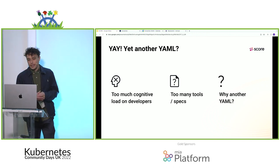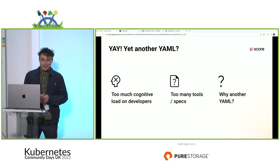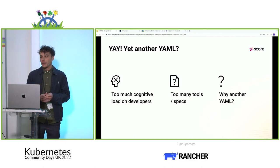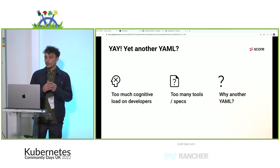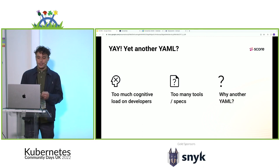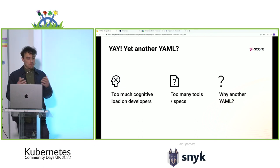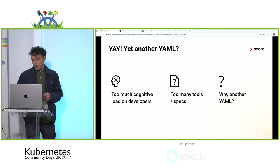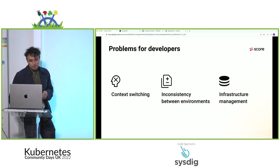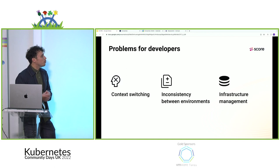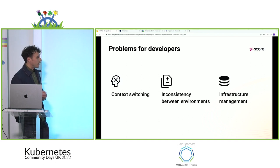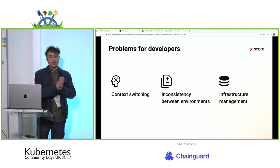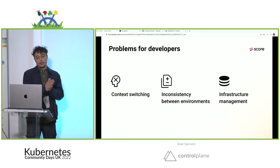You may be thinking: do we need more YAML? We've already got too much cognitive load on developers, we've already got a plethora of tools and specifications. Do I need another YAML? But bear with me, I'll try to explain why. Looking at problems for developers today, we've got context switching, which comes under cognitive load.